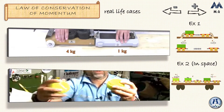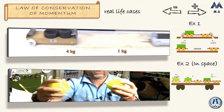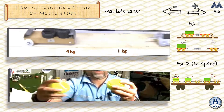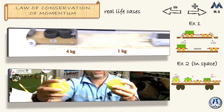Finally, let's look at real-life cases that represent the examples we just discussed. In the spring-trolley case, notice the lighter trolley moves faster than the heavier one. Since the momentums must be equal and opposite in magnitude, the lighter trolley needs more velocity to balance the momentum of the heavier object. Another example comes from space — an astronaut scenario where the first object moves toward the second, they collide and move together. In space it's easier to observe momentum conservation because there are no external forces like weight or friction.